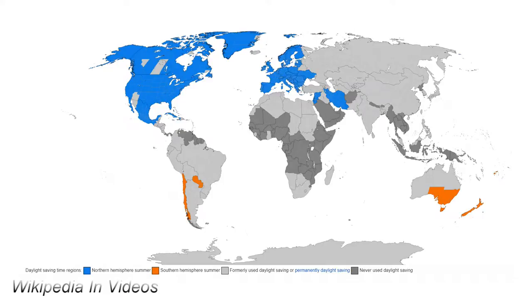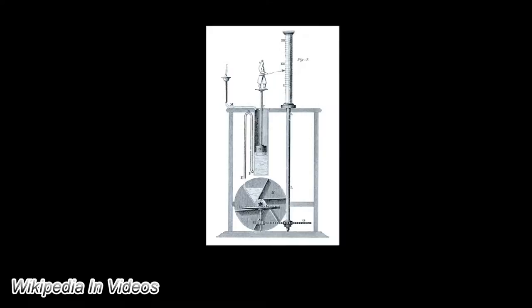Daylight saving time, DST, also daylight savings time or daylight time, in the United States, in summer time in the United Kingdom, European Union, and others, is the practice of advancing clocks during summer months so that darkness falls later each day according to the clock.